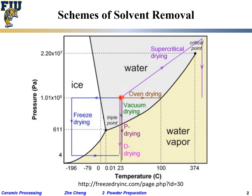There is also supercritical drying, where you increase temperature and at the same time increase pressure — quite often done in an autoclave, essentially a pressure cooker. You raise the temperature and raise the pressure until you reach a boundary where there is no clear distinction between gas and liquid. The gas then leaves the system — that's supercritical drying. All these are possible ways to remove solvent from a suspension and obtain your ceramic powder.